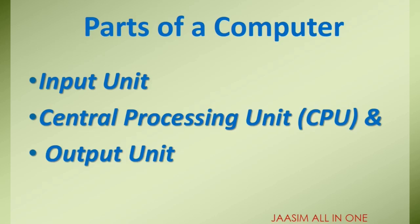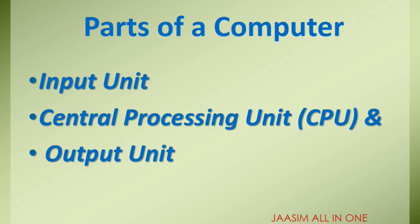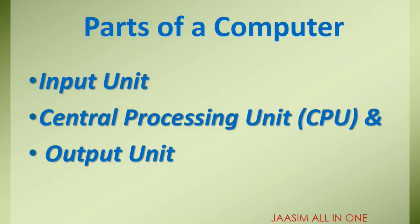Parts of a computer: input unit, central processing unit simply known as CPU, and output unit. These are the parts of a computer. These three units — input unit, central processing unit, and output unit — integrated together are known as a computer.